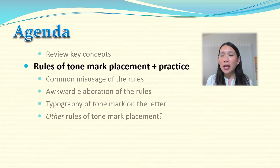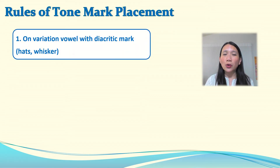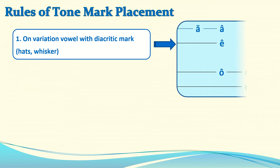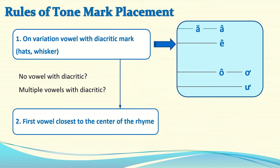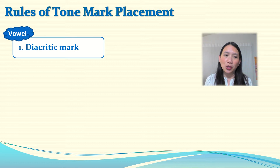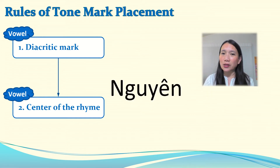Let's revisit the rules of tone mark placement with practice. According to the symmetry approach, the first rule is: place the tone mark on the variation vowel with diacritic mark — those six variation vowels with either a head or a whisker. If you don't have such a vowel, or if you have multiple of them, only then the second rule applies: place the tone mark on the vowel closest to the center of the rhyme. In summary: rule one — vowel with diacritic mark; rule two — vowel at the center of the rhyme. First practice: does the base word have a vowel with a head or whisker? Yes — place the tone mark there.